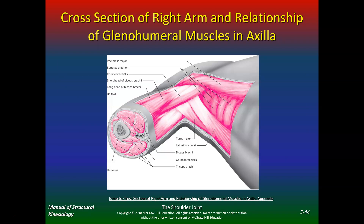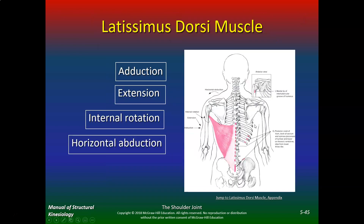Here's a cross-section of the right arm showing the relationship of the glenohumeral muscles. You can see the pec, serratus, lats, teres major, coracobrachialis, short and long head of the biceps, deltoid, and humerus. Understanding this relationship is important. The origin and insertion must be understood to understand the actions, but on the quiz I won't ask origin and insertion — I will ask relationships and movements. The lats do adduction, extension, internal rotation, and horizontal abduction.